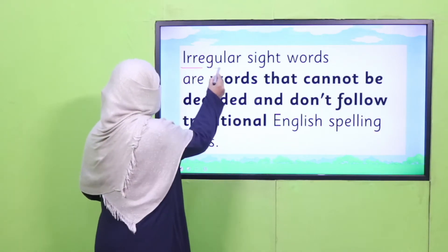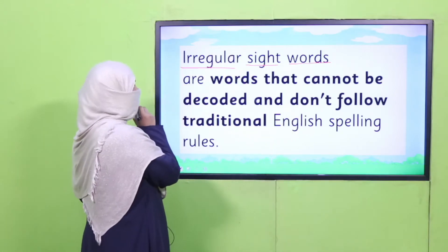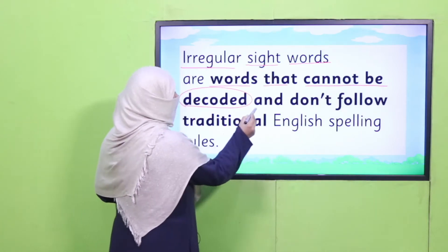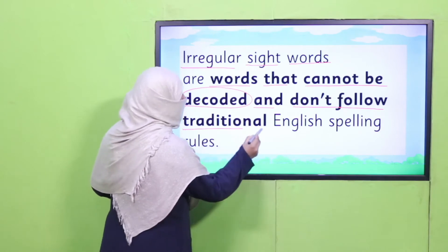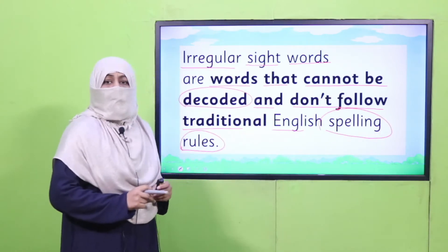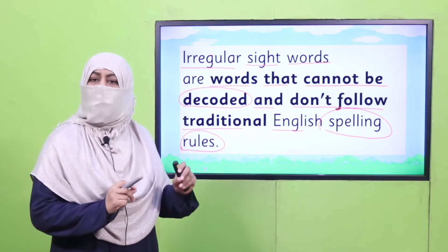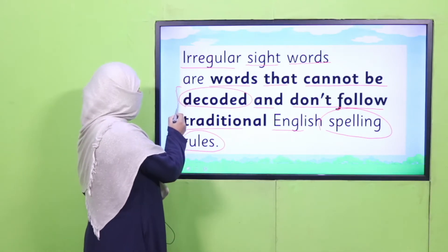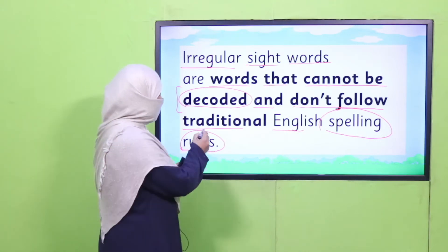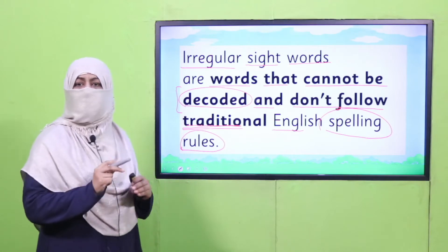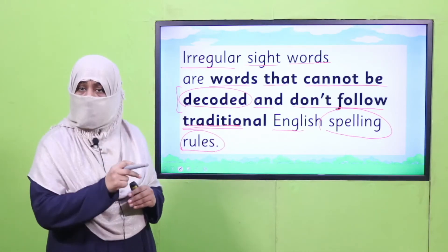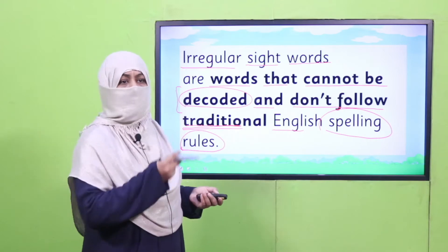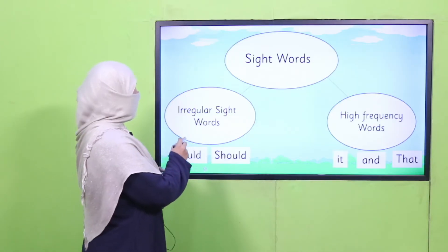Today we will learn about irregular sight words. Irregular sight words are words that cannot be decoded and don't follow traditional English spelling rules. Whenever we want to read or write a word, we spell it and then read it and write it. But there are few words for which this formula does not work, because they don't follow the traditional rules of spellings. They are a little out of pattern — that's why we call them irregular.